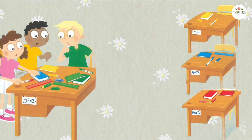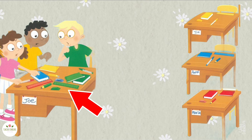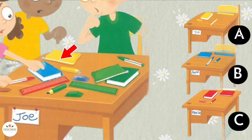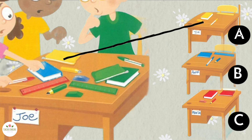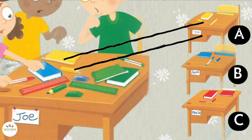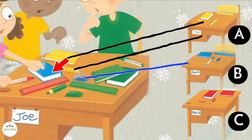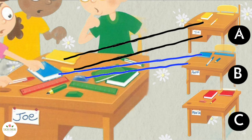Activity two. Look at Joe's desk. Please note that Joe has two extra items from each of the other desks on his desk. Draw a line from the school things to the correct desk. Take a look at Joe's desk.